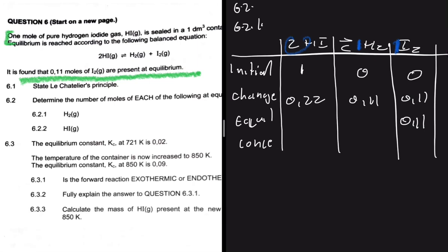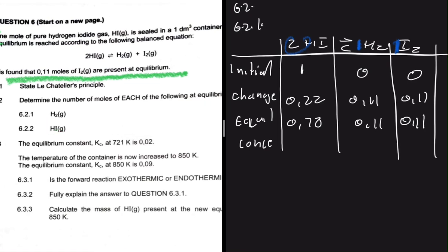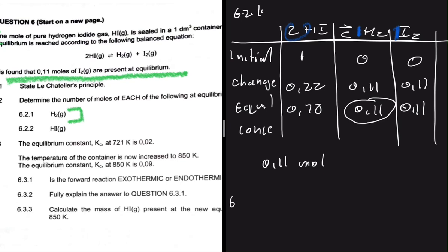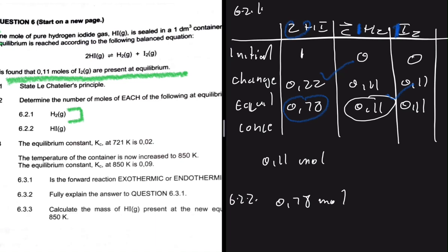So for 6.2.1, the number of moles of H₂ at equilibrium is 0.11 mol. For 6.2.2, the number of moles of HI at equilibrium is 0.78 mol. All this working just for one mark — I really don't understand the mark allocation. Maybe there's a quicker way to find the moles of H₂, but for HI you definitely need the full working.